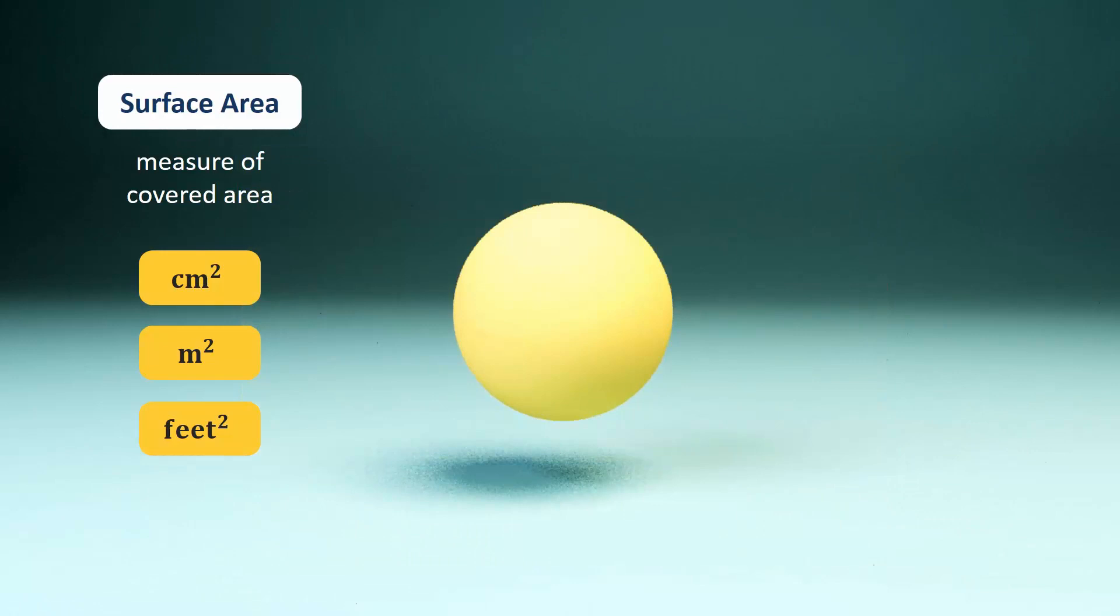If we wanted to find out the amount of space that this ball takes up, we would calculate its volume. Since volume is a three-dimensional measure of space occupied, its units are always cubic units.